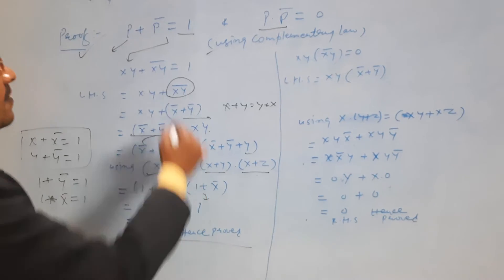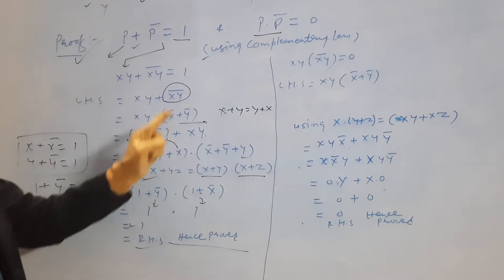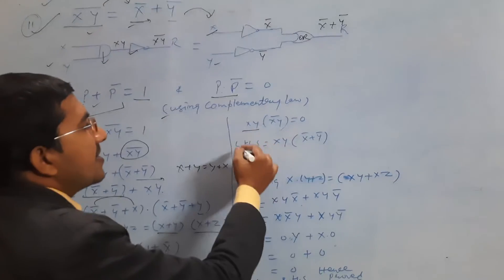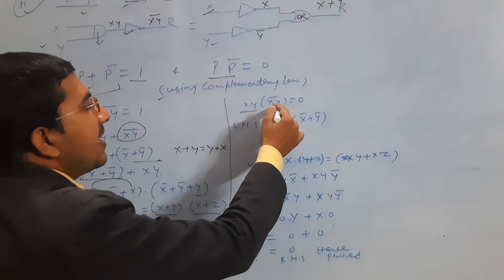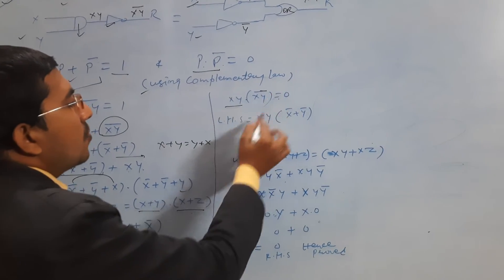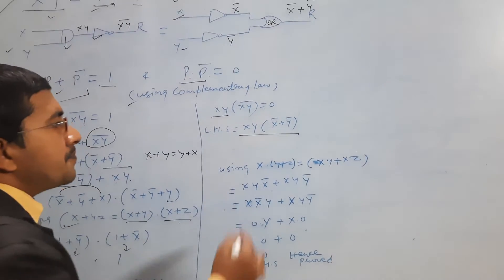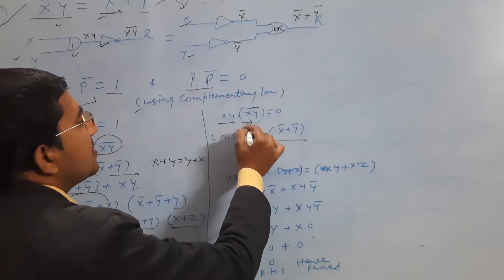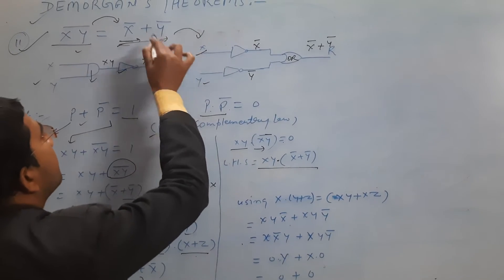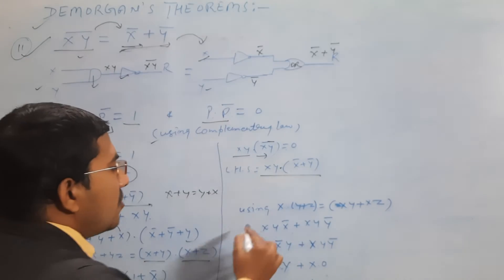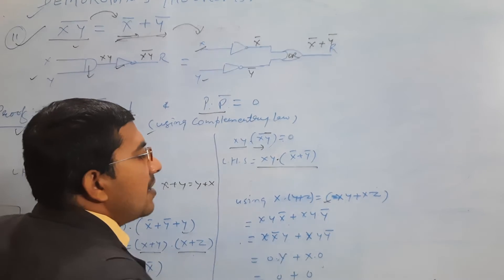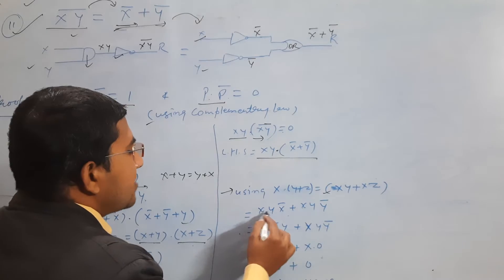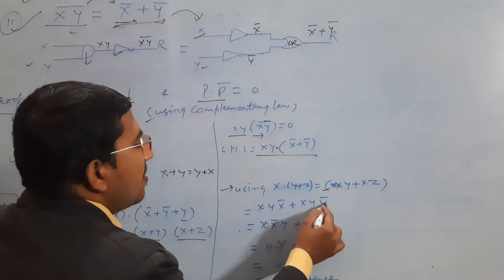Hence we have proved the first statement. Now coming to the proof of the second statement. Using p · p' = 0, where p = xy, we get xy · (xy)' = 0. Taking the LHS we can write xy · (x' + y'), because we are replacing (xy)' with x' + y'.